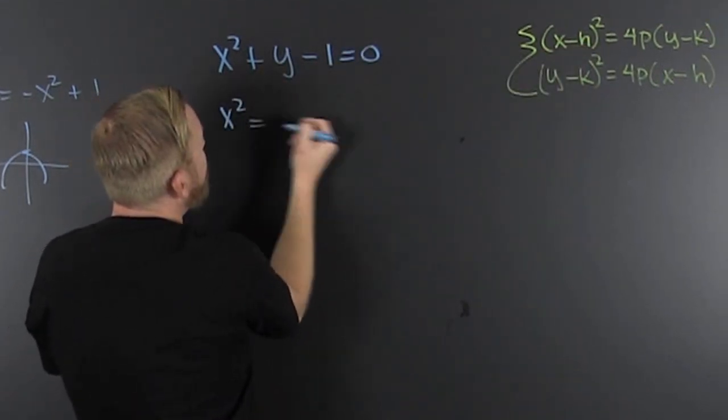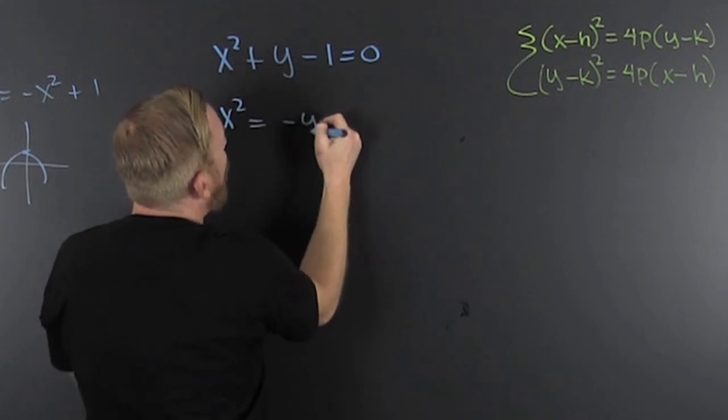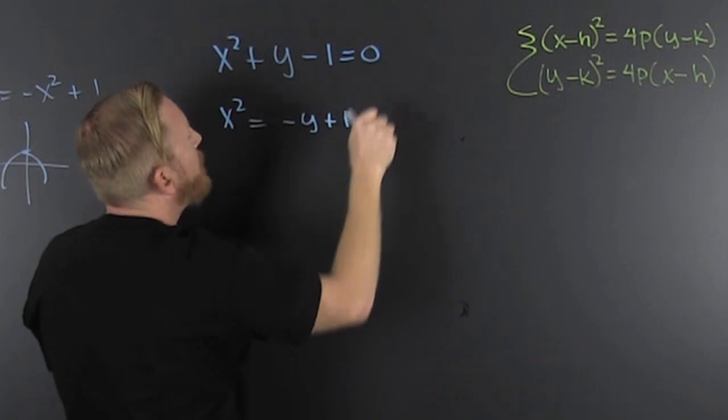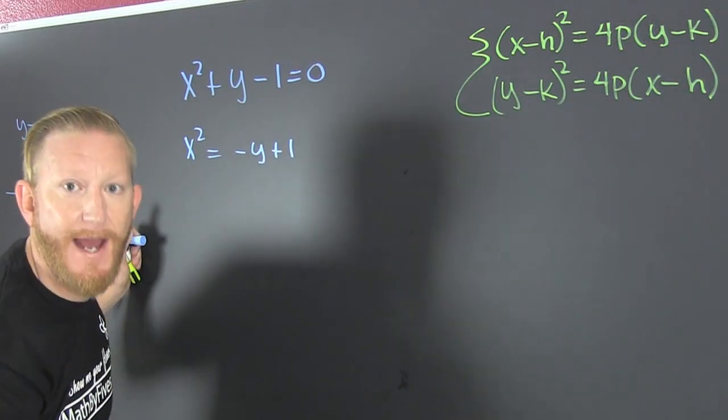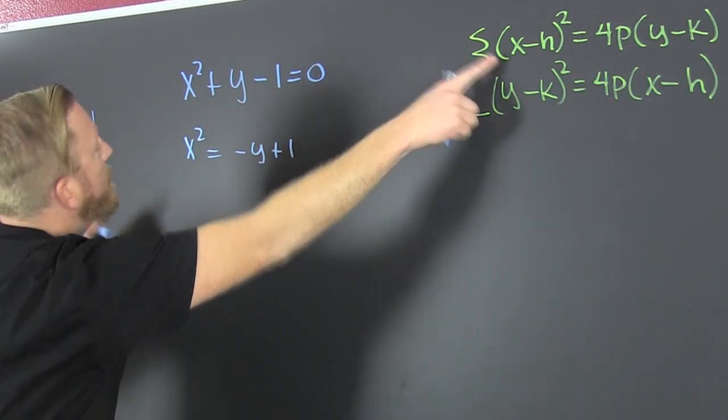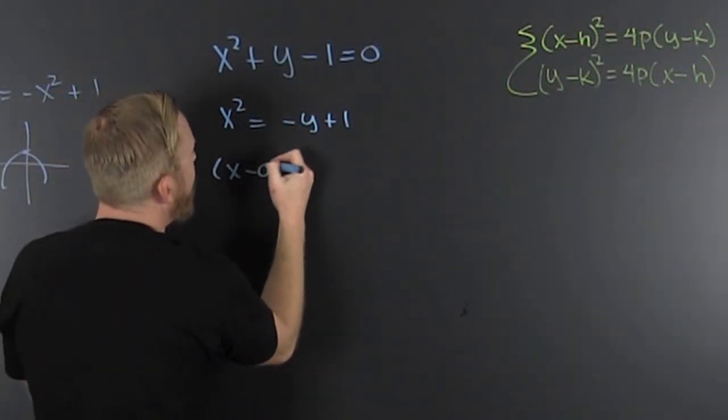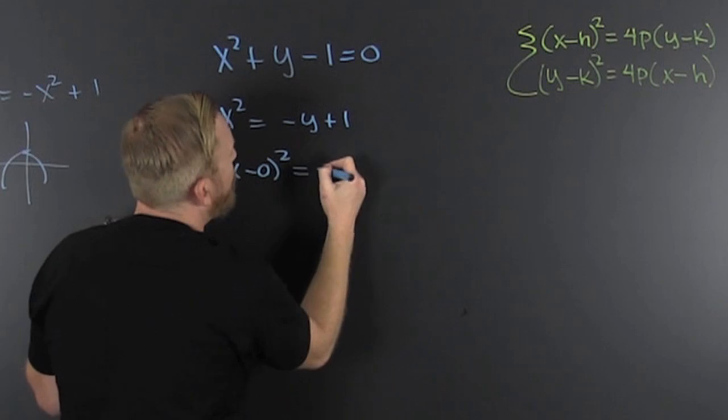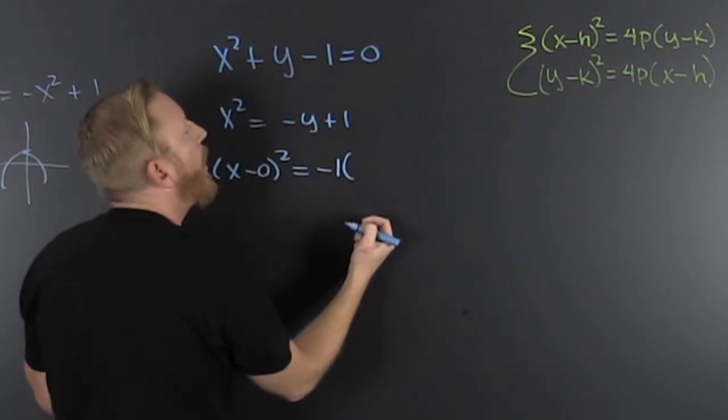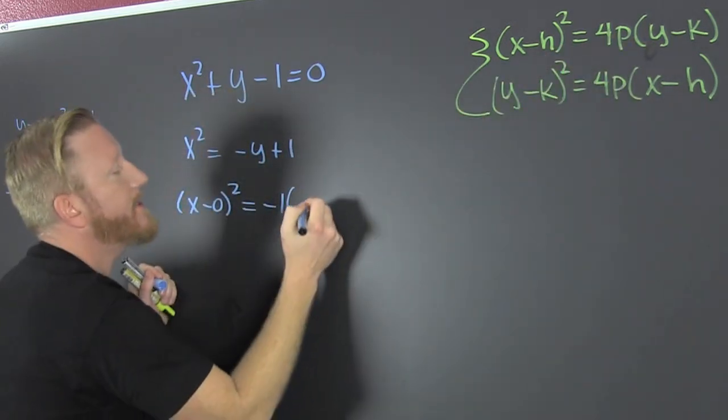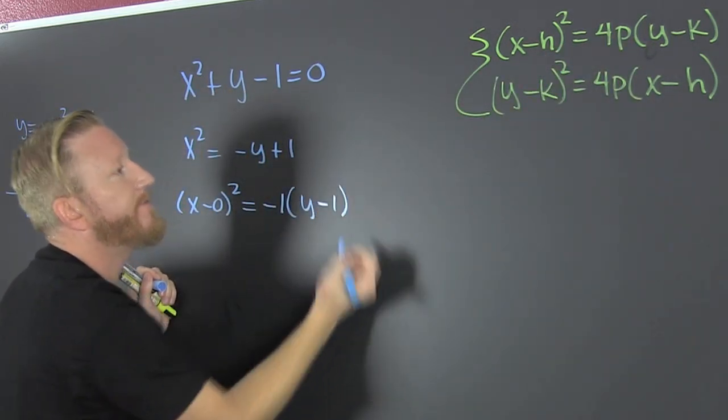So that says x squared is equal to negative y plus one. What I do? I subtracted the y and I added the one. Now I'm still trying to get it in that form. So in doing so, I go that's x minus nothing squared. That's equal to, pull that one out, y, because my y is a positive one coefficient. And that's a y minus one.